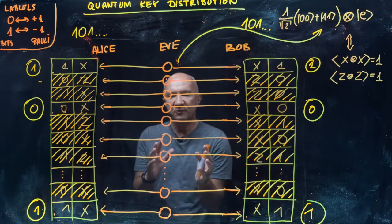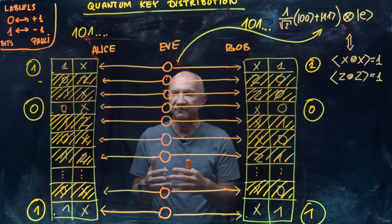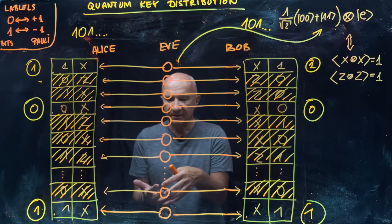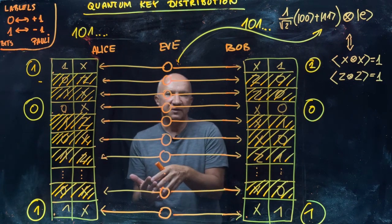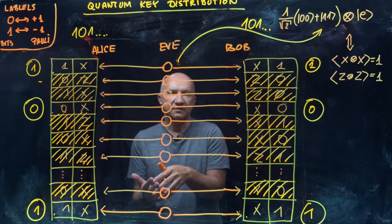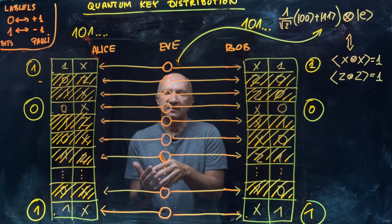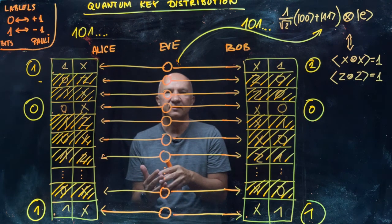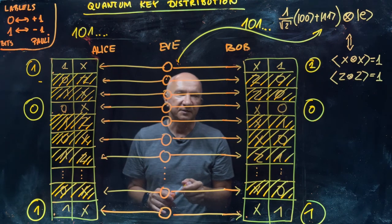So that's essentially how the key distribution works. The random subset of data is used to test for correlations, and if the correlations are fine, Alice and Bob are confident that the remaining part — which was not revealed in public — is also perfectly correlated. And because it was not revealed, it is indeed secret.